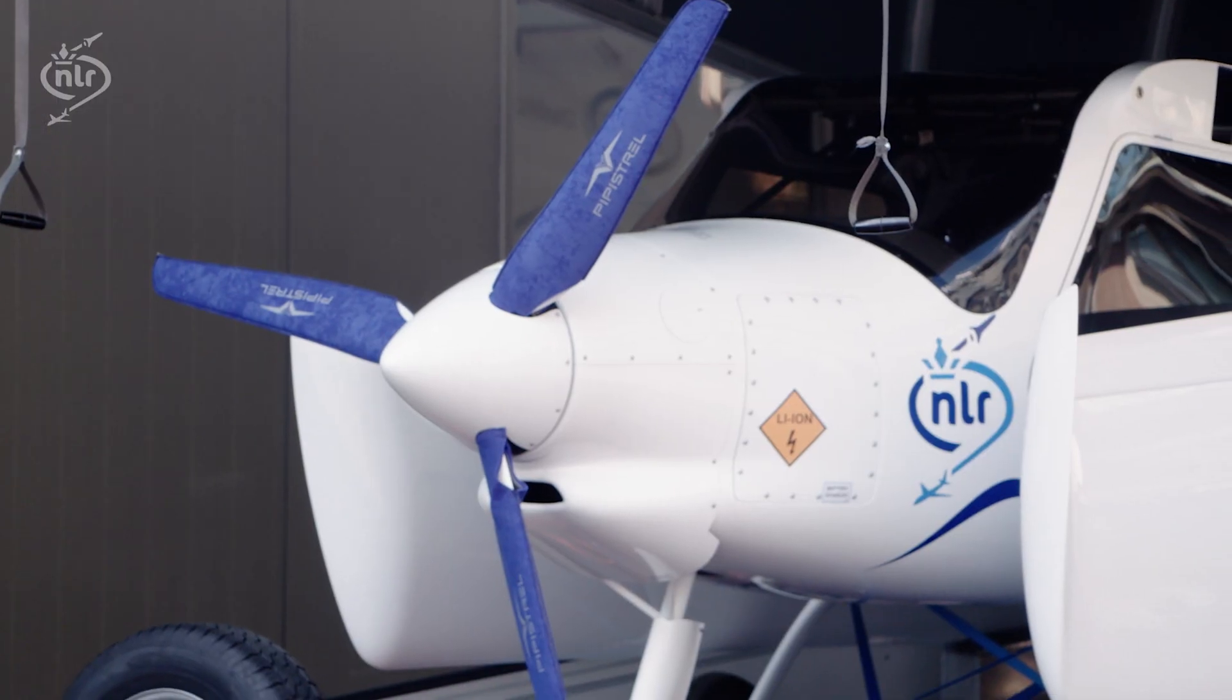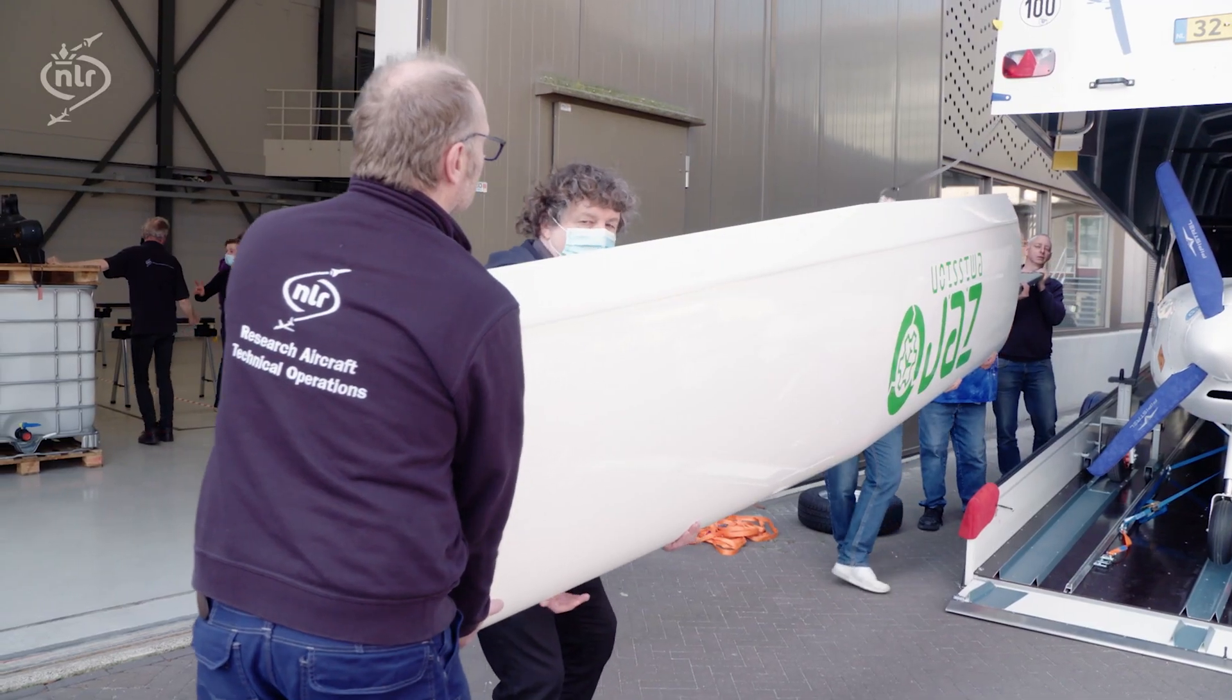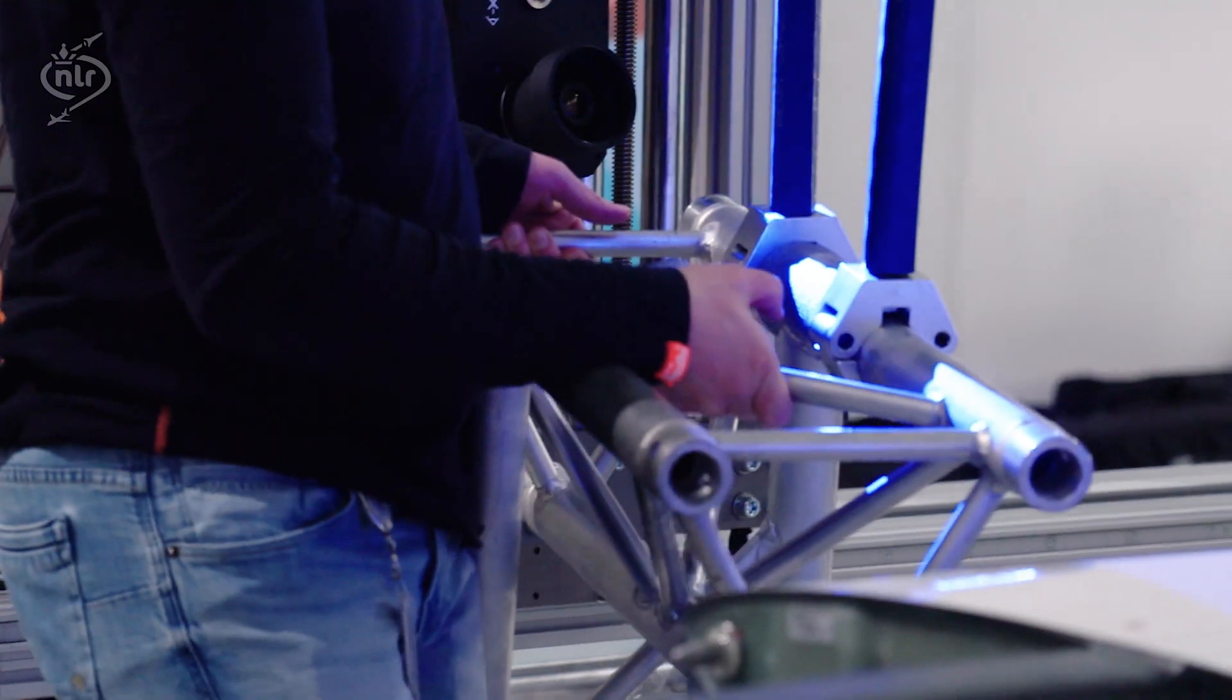In this case a wing of NLR's brand new fully electric airplane, the Pipistrel, is being put up for inspection.